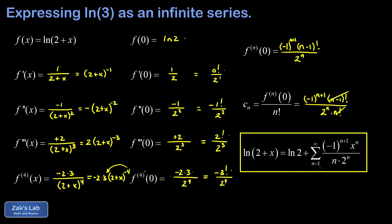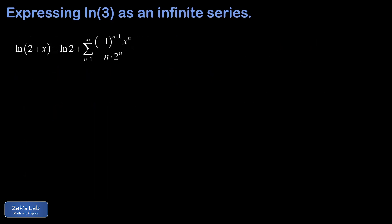The plan is to substitute x equals 1 to get a series representation of natural log 3. But we've learned our lesson — we need to check whether the series converges when x equals 1. With x replaced by 1, the infinite series portion becomes the sum of negative 1 to the n plus 1 over n times 2 to the n. This is essentially the alternating harmonic series but with every term smaller in magnitude, so we're confident it converges.